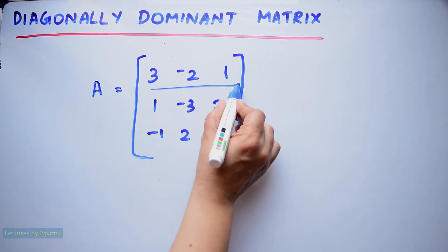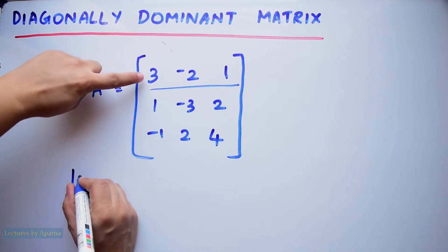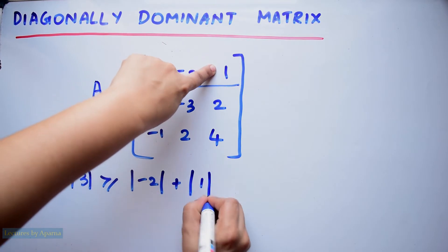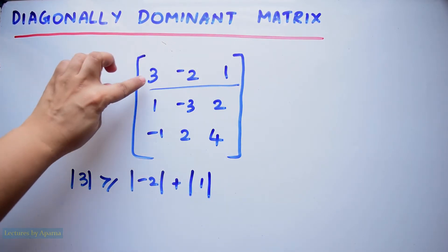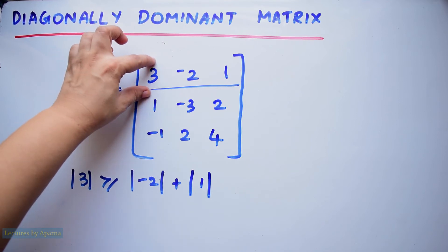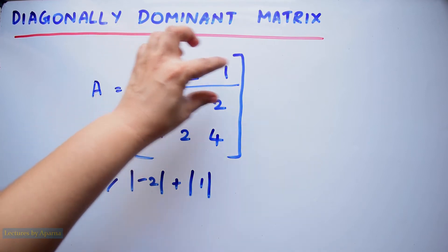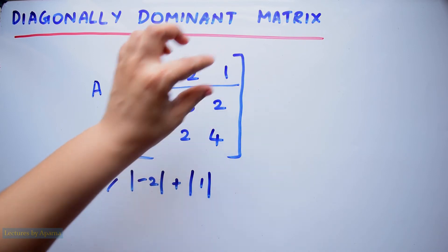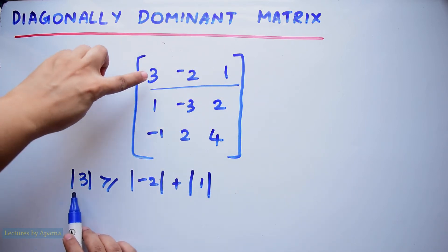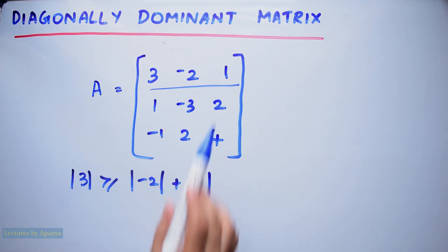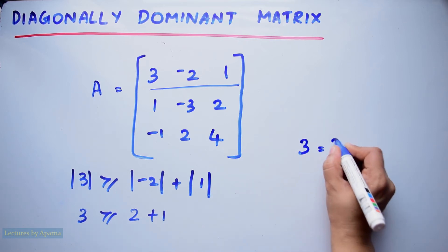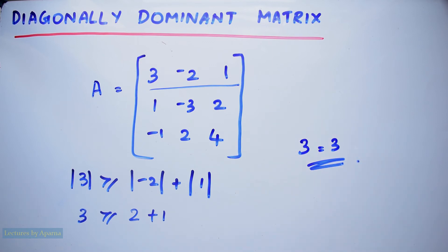If we consider the first row, we have to check if modulus of 3 is greater than or equal to modulus of minus 2 plus modulus of 1. That is, we take the diagonal element in that row and check if its modulus is greater than or equal to the sum of the moduli of all other non-diagonal entries. In the first row, 3 is the diagonal element and minus 2 and 1 are the non-diagonal elements. Modulus of 3 is 3, which is greater than or equal to modulus of minus 2 (which is 2) plus modulus of 1 (which is 1). Therefore we get 3 equals 3, and the condition has been satisfied in the first row.